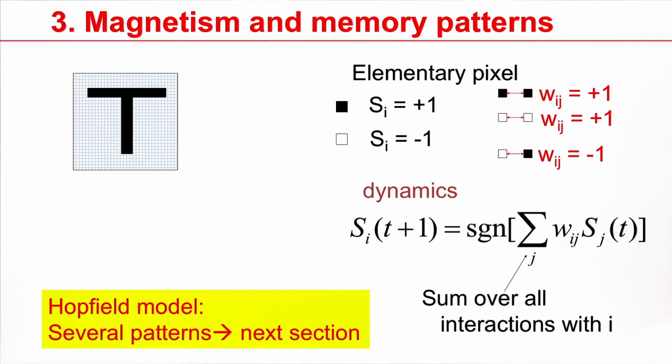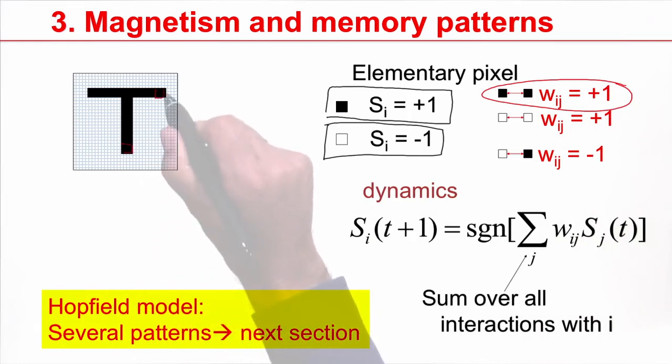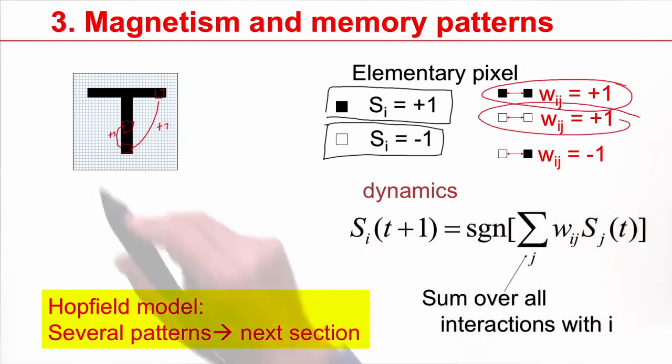Now, instead of needles pointing upwards and downwards, we'll talk about pixels. The black pixel has a binary value plus one. A white pixel has a binary value minus one. If I want to store a certain configuration of pixels, I will choose interactions such that I have positive interactions between pixels that should both be black. It means this pixel talks to that pixel with an interaction weight plus one. Similarly, the white pixels talk to each other with an interaction weight plus one.